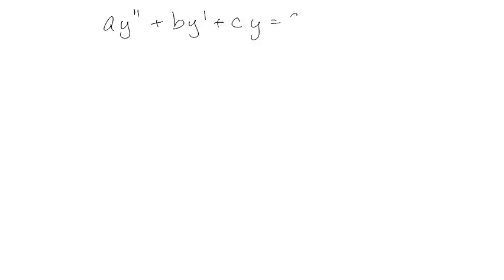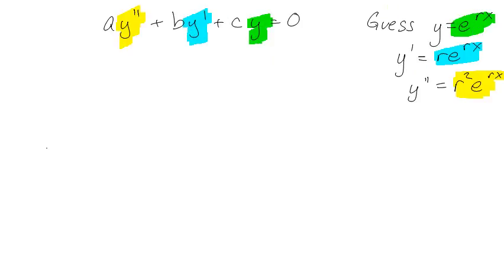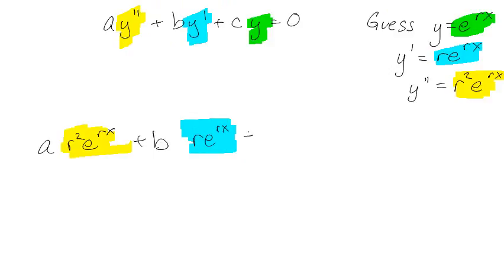Now back to real stuff. We have this constant coefficient homogeneous second-order ODE, and we're going to guess a solution of y equals e to the rx. So y′ would be r·e^(rx), and y″ would be r²·e^(rx). I can substitute those in: wherever I see y″ I put r²·e^(rx), wherever I see y′ I put r·e^(rx), and wherever I see y I put e^(rx). So I have a·r²·e^(rx) + b·r·e^(rx) + c·e^(rx) = 0.